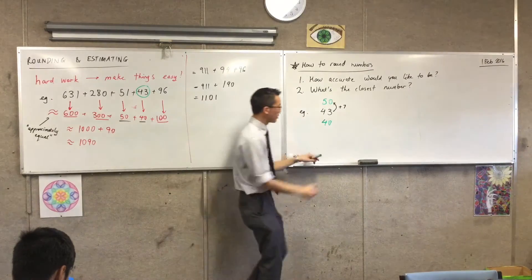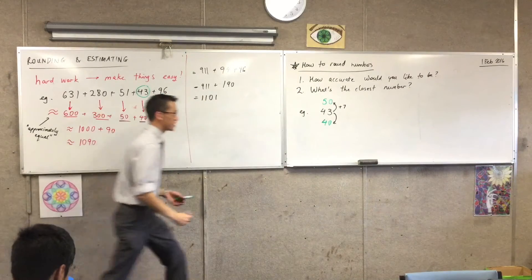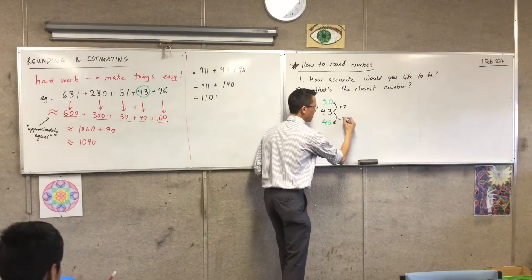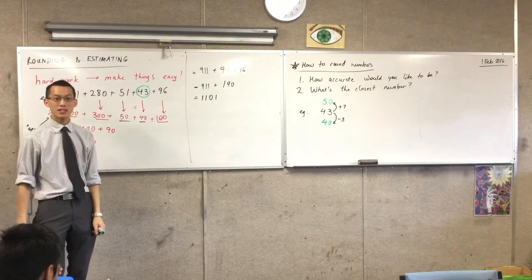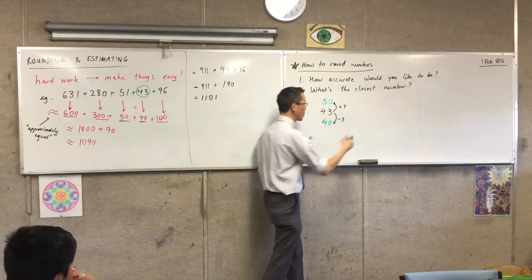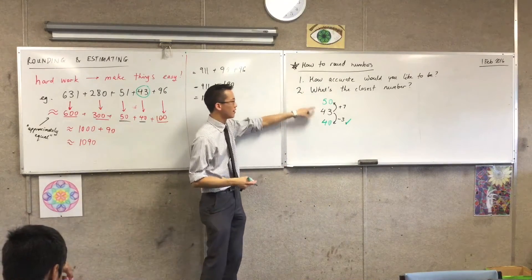But have a look at the other number. What do I have to subtract from 43 to get 40? 3. Very good. I subtract 3. So you can clearly see which one of these is closer, right? 40 is why we picked this one, because it's a smaller gap. It's closer to 43.